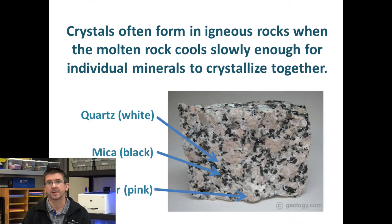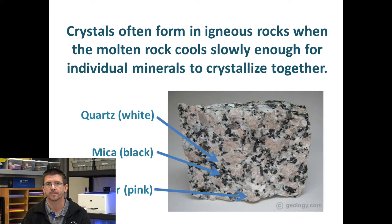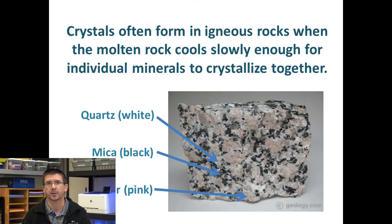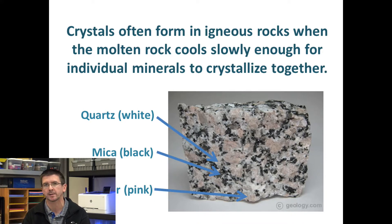Granite is an example of an igneous rock where we can see very distinct minerals. It's made of three minerals: quartz, mica, and feldspar. If we look at a piece of granite, the quartz will typically be white, the mica will be a gray to black color, and the feldspar will be pink. We're able to see these three distinct minerals in the rock.